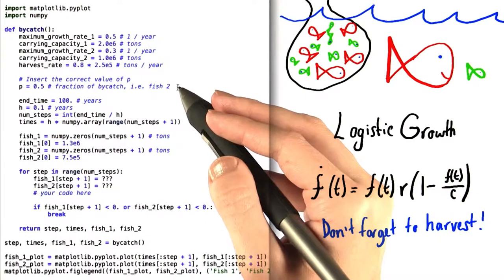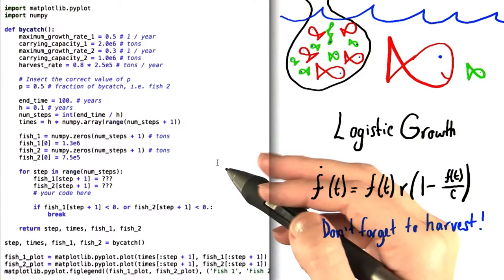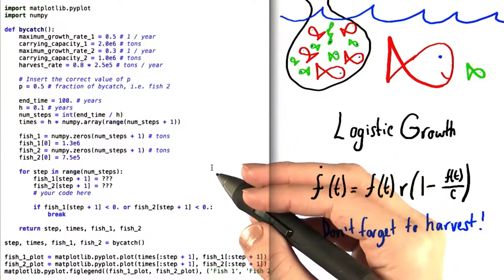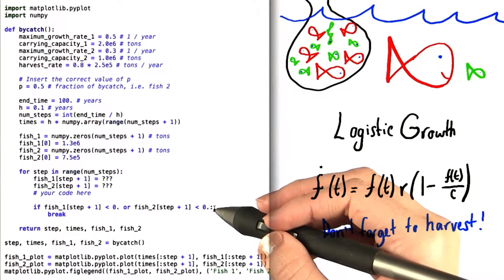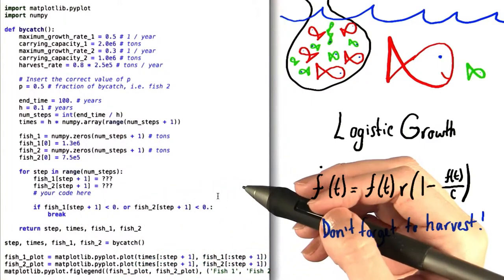After you've calculated the correct value of P, come down to the for loop and use, as you've done so many times before, the forward Euler method. You'll notice that we've already included a line for you to prevent the population of either type of fish from becoming negative. Good luck!